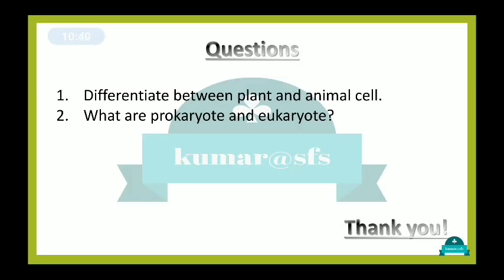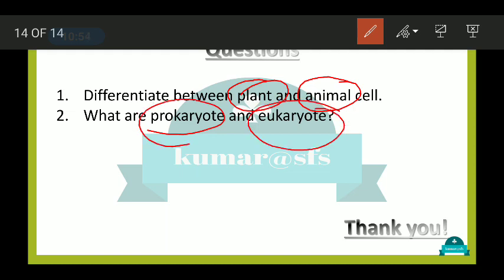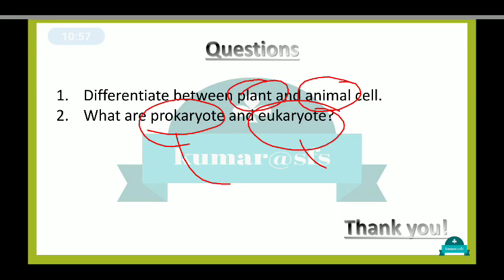That's all — we have finished this chapter. Here are some questions for you to attempt: differentiate between plant and animal cells, and explain what prokaryotic and eukaryotic cells are in a few words. Thank you so much, keep studying — bye bye!